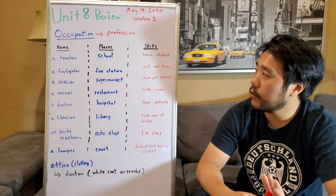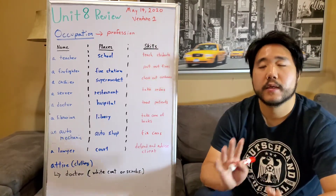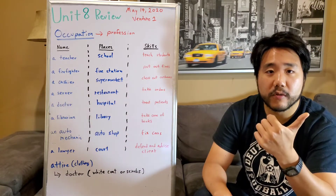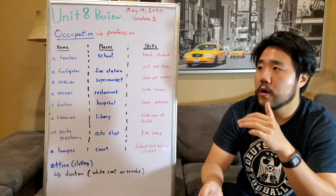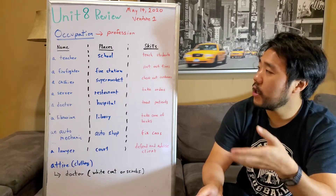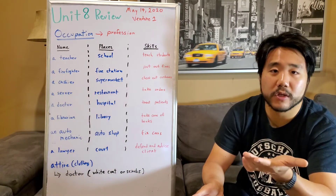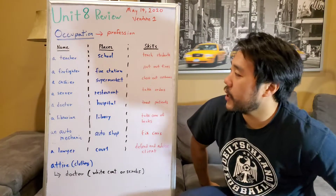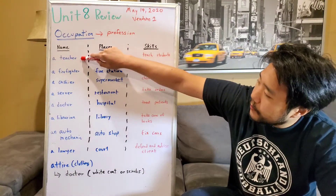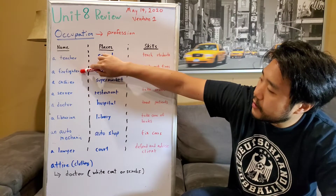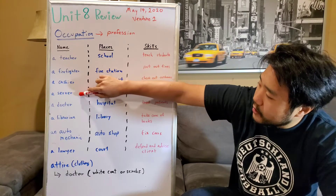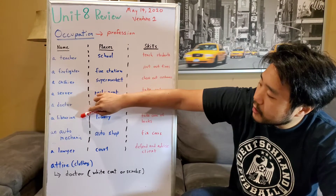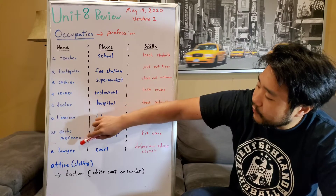The first thing we learned in unit eight was about occupation — occupation means the same thing as a job. We learned some names of occupations: a teacher, a firefighter, a cashier, a server, a doctor, a librarian, an auto mechanic, and a lawyer.